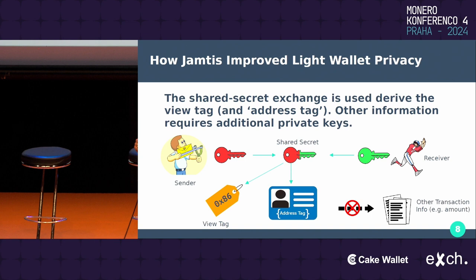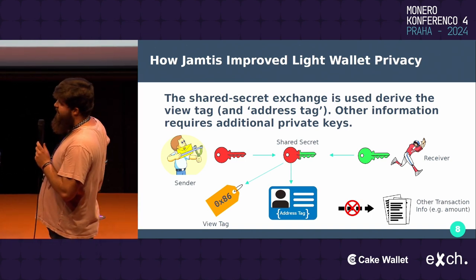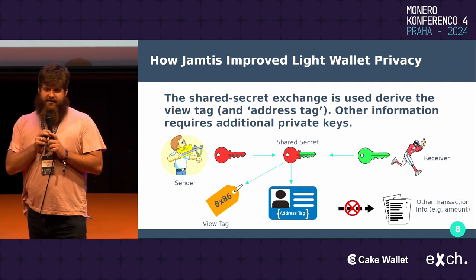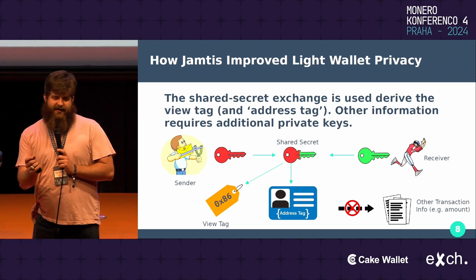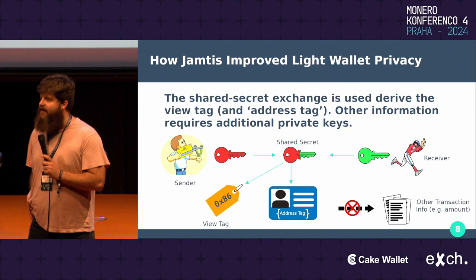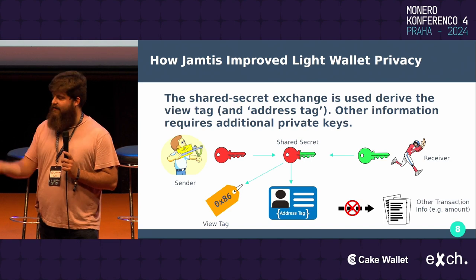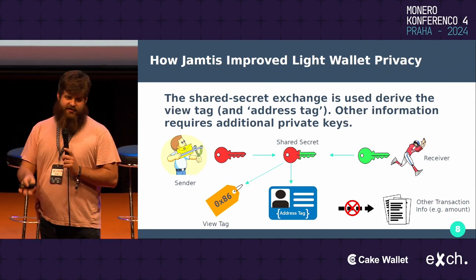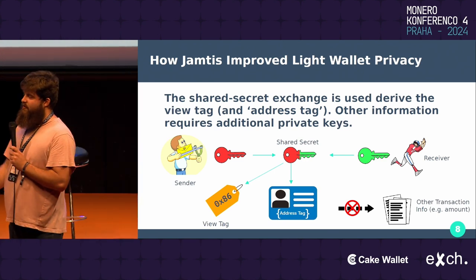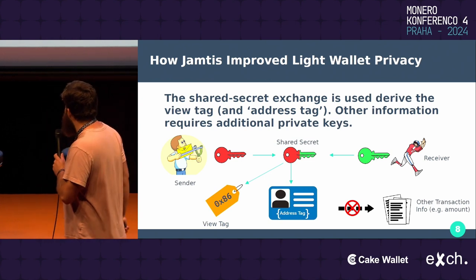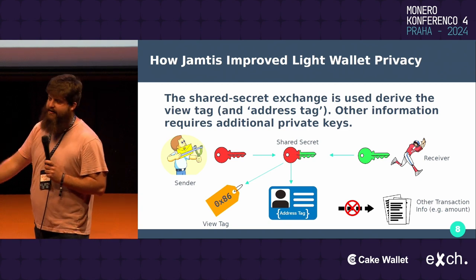How Jamtis already improves LightWallet privacy: between the sender and the receiver, just like CryptoNote, we have a shared secret. They put a public key on the chain and there's a public key inside of the address — you do a shared secret between those two. In CryptoNote addresses that shared secret shows all information, including amounts and whether you've received an e-note to a certain address. Jamtis already hides some of that — you get to see a view tag and what's called a new thing called an address tag, and the other transaction information is hidden. But that address tag will become a problem.